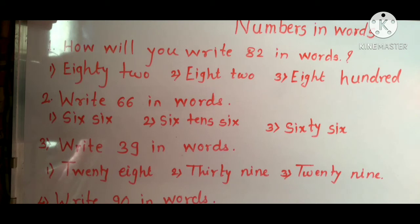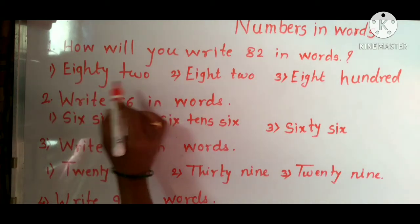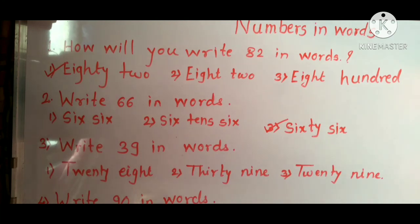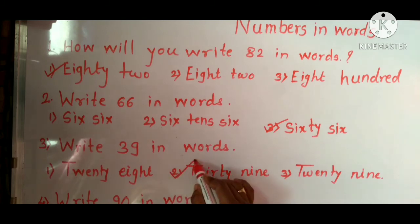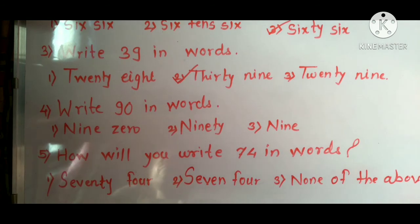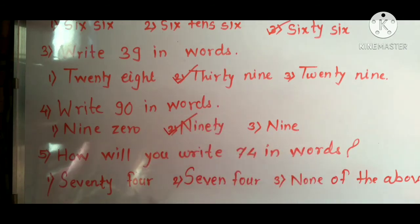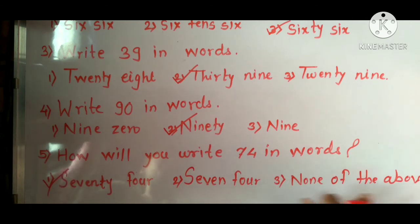Now we will solve some MCQs. First question: how will you write 82 in words? See here, the first option — eighty-two — is correct. Write 66 in words: this number is 66, so the third option is correct. Write 39 in words: the first option is 28, the second is 39, and the third is 29 — so 39, the second option, is correct. How will you write 74 in words? The first option, seventy-four, is correct.